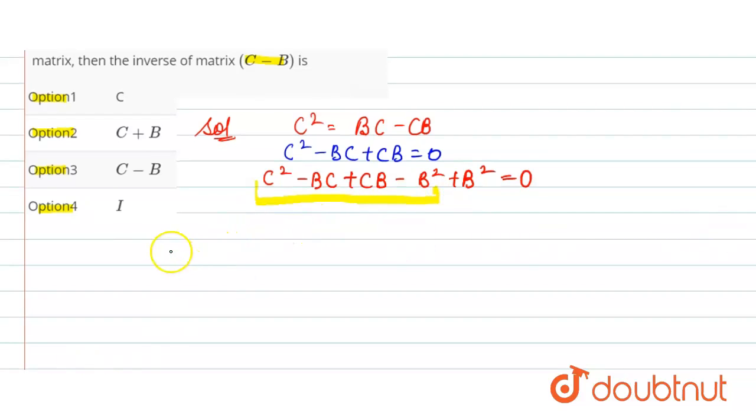Now to solve this, if we write this in the form of M1 minus M2 into M1 plus M2. So here, generally we know that if A minus B into A plus B, then this is A squared minus B squared, because here we know that AB is equal to BA.